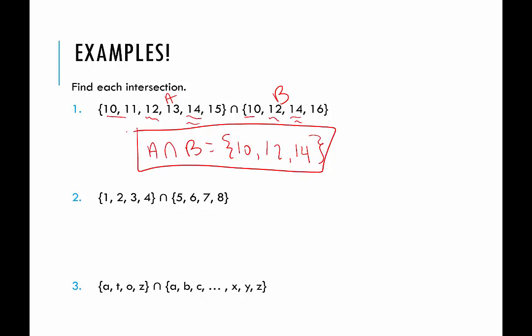In the second example, set A has the elements 1, 2, 3, and 4, and set B contains the elements 5, 6, 7, and 8. So what do A and B have in common? In this case, they don't have anything in common. So how do we represent nothing in set theory? You have two options: you can use the empty set, which is just braces with nothing inside it, or you can use the null set. Either one indicates that there is nothing in the intersection. You cannot combine the two — you pick one or the other.